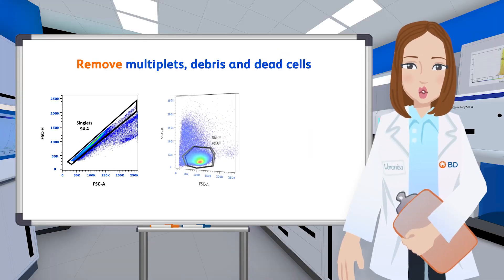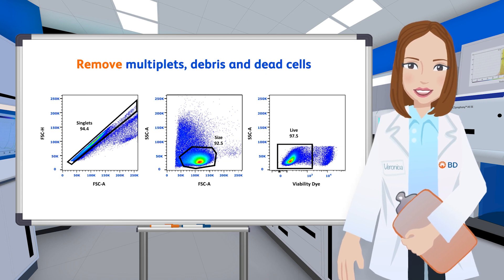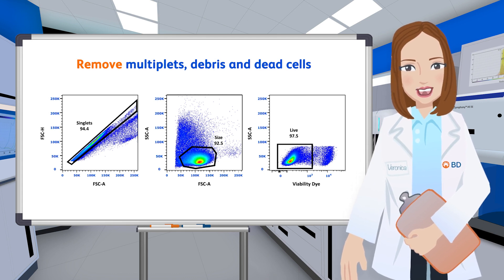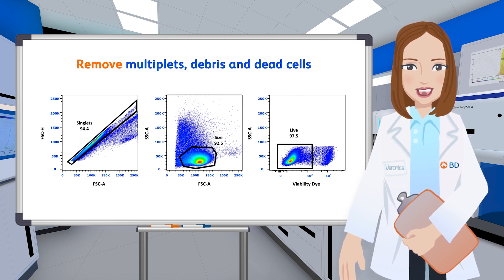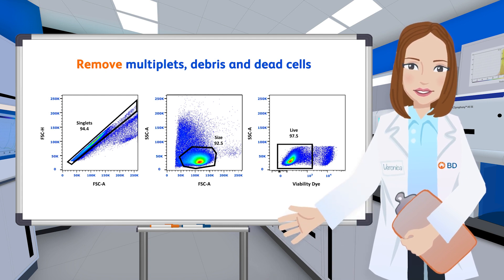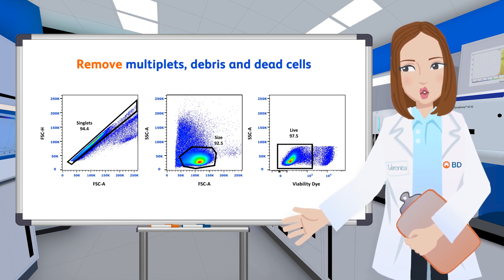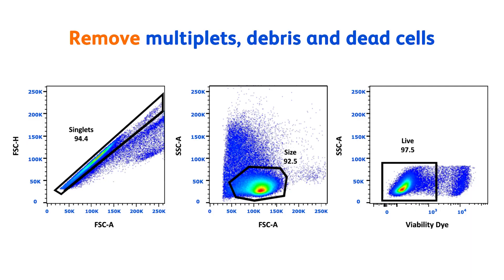Lastly, removal of post-acquisition anomalies should be followed with scatter gates to exclude multiplets of cells and debris from the data. Because dead cells can nonspecifically bind antibodies, it is also recommended to exclude them from your analysis. Incorporating an amine reactive viability dye, like the BD Horizon fixable viability stains, into your panel provides a way to discriminate permeable dead cells from impermeable live cells.